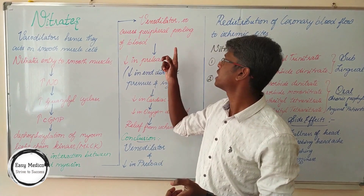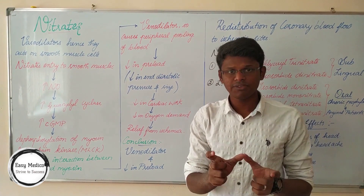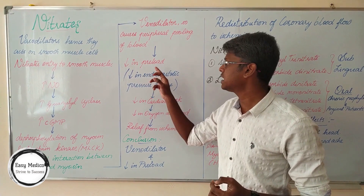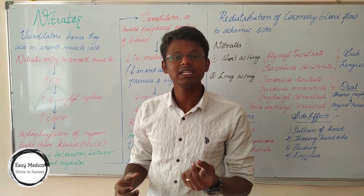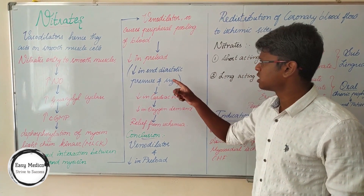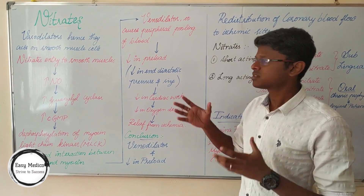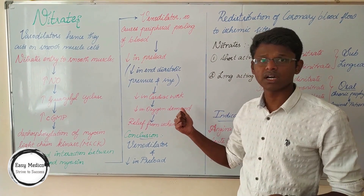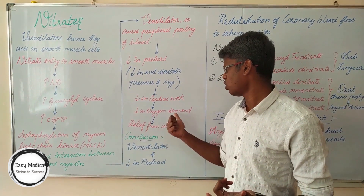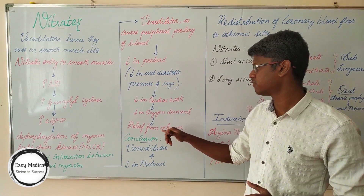Rather, they cause venodilation — dilation of the veins. Because of this venodilation effect, they cause peripheral pooling of blood, which ultimately leads to a decrease in preload. Preload is the end-diastolic volume or pressure needed for the filling of ventricular blood. This decrease in end-diastolic pressure and size decreases cardiac work, which is the pumping of blood by the heart. When cardiac work decreases, there is a decrease in oxygen demand, and ultimately the target is achieved — relief from ischemia.